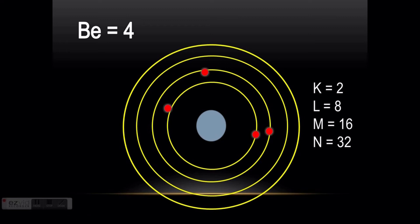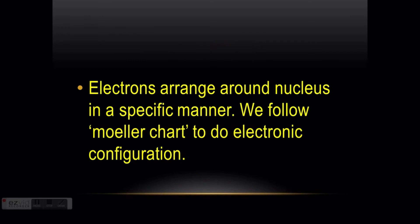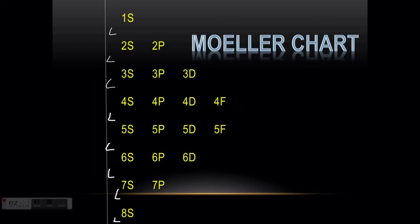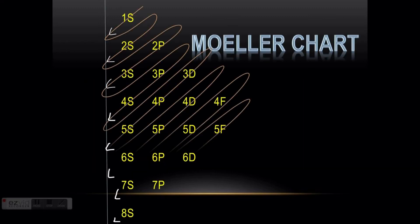Now, what about sub-shells? Electrons arrange around the nucleus in a specific manner. To know the order of sub-shells, we follow Moeller's chart. Electrons first enter 1s, then 2s, then 2p, 3s, 3p, 4s, 3d, and so on. You may wonder why 4s comes before 3d — I will clarify that doubt when we do the electronic configuration.